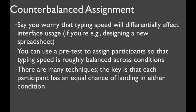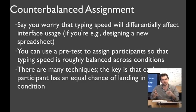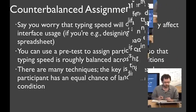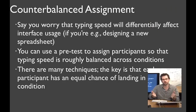We've talked about counterbalancing the order of conditions that participants experience. You can also counterbalance how you assign people the conditions. Say, for example, you're worried that typing speed will differentially affect something in your interface. You're building a new spreadsheet or something like that. You could use a pretest to establish typing speed ahead of time and use that to assign people to conditions. There's many techniques for doing this. The simplest way to do it is just look at high-speed typers versus low-speed typers. The key, no matter what, is that each participant has an equal chance of ending up in either condition.